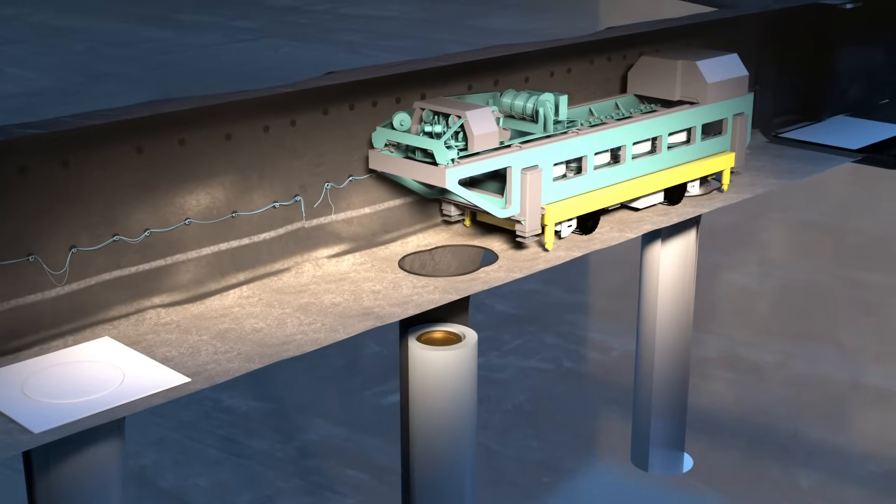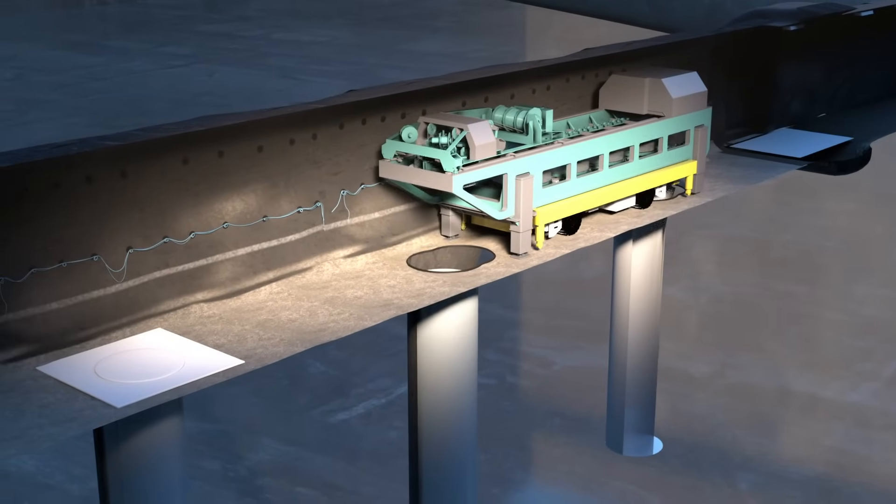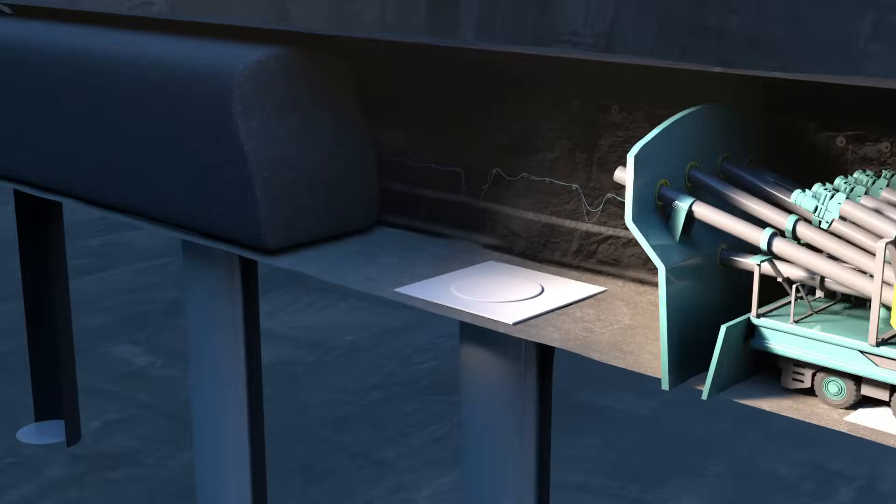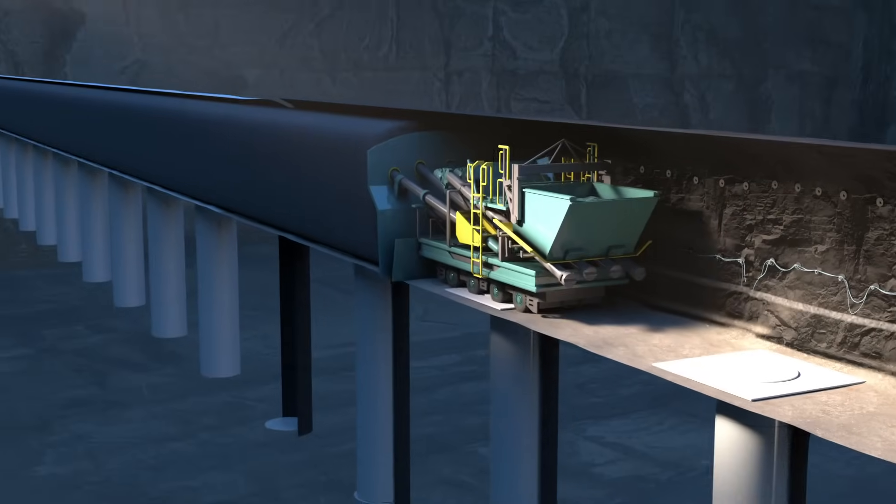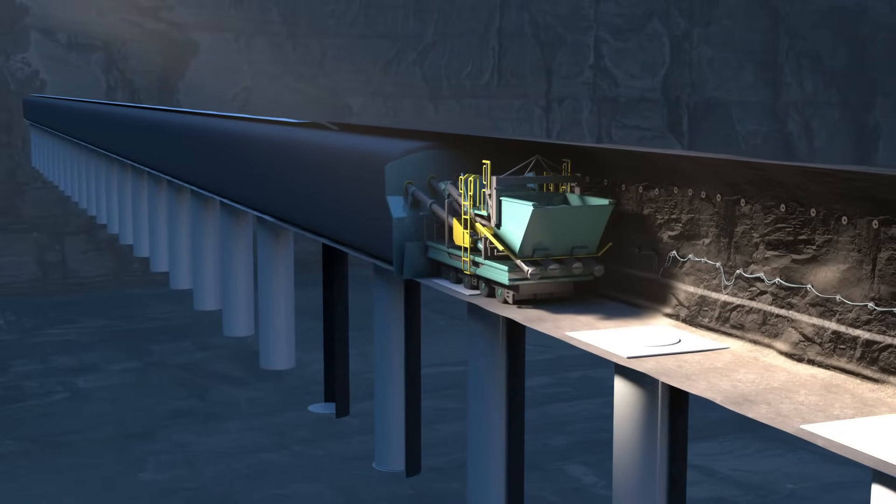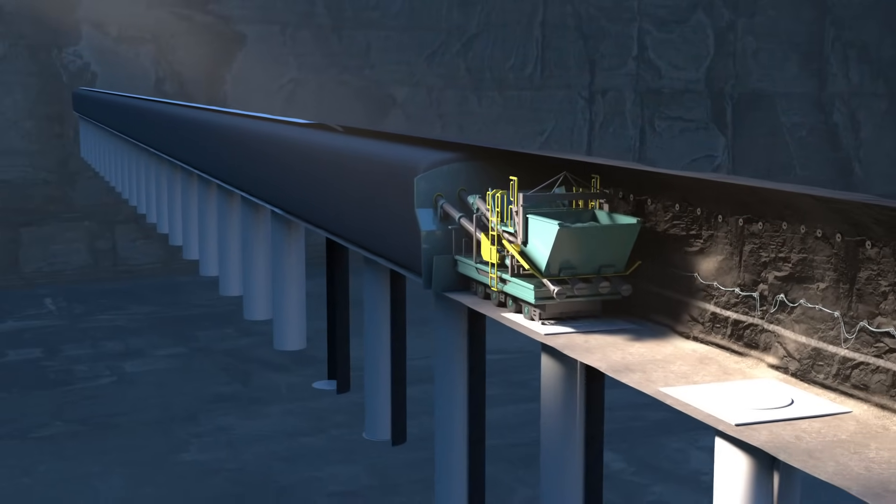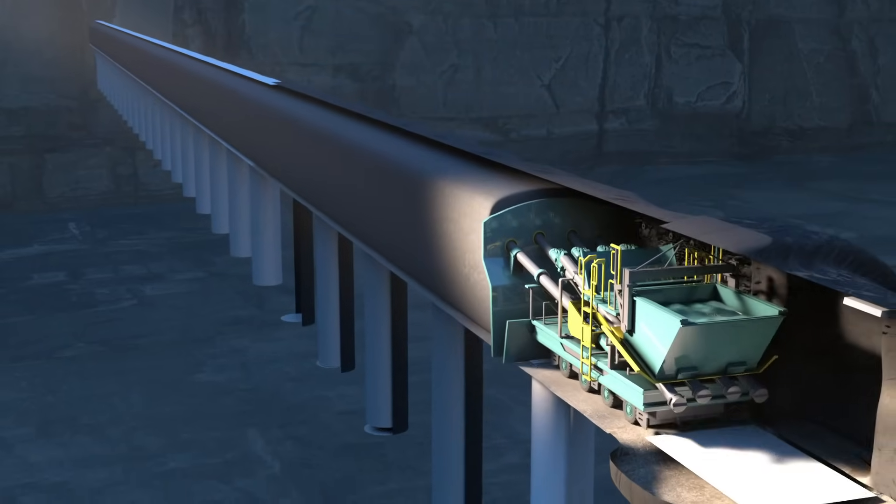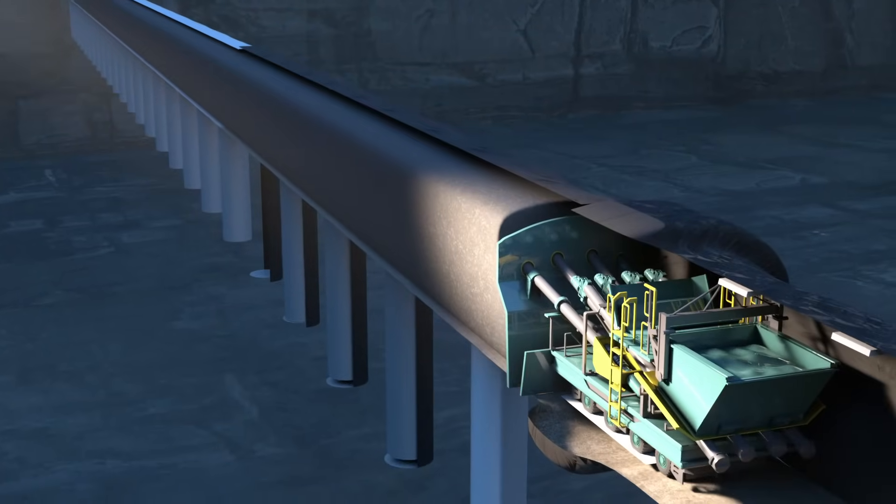Once the canister is lowered into the hole the upper part of the hole is also filled with bentonite buffer blocks and the tunnel is backfilled with granular bentonite clay. The tunnel backfill prevents water from flowing in the tunnels and holds the buffer material in place.